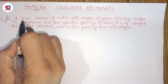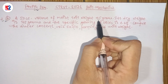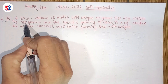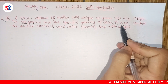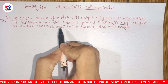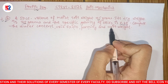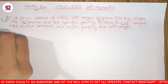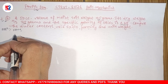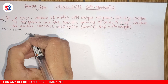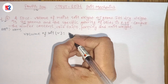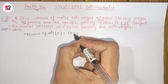So the given values are: volume of soil sample is 50 cc. We need to convert this to cubic meters. The weight of the field sample is 95 grams, and the dry weight of the soil sample is 75 grams. Volume of soil V is equal to 50 cc.